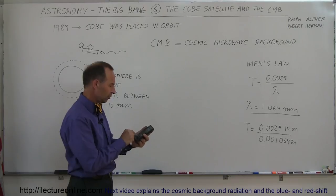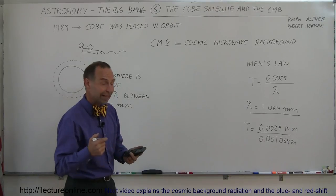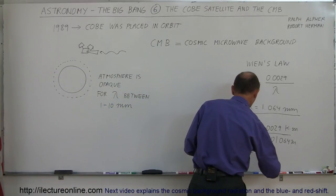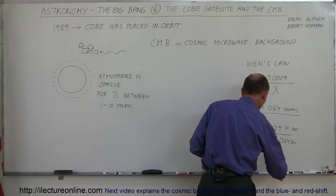We get 0.0029 divided by 0.001064 equals, and it turns out that gave us a temperature, T, of about 2.74. I think the actual answer would be 2.74 Kelvin.